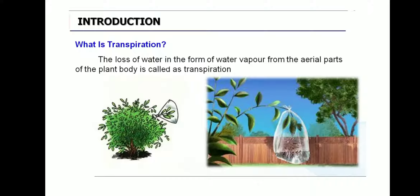When you pour water, it is sucked by the root, and the tissue called xylem is very much involved in the transportation of water to all parts of the plant. The absorbed water is supplied to all parts of the plant. This water is used for the process of photosynthesis, and the excess water is released out from the plant — this is what we call transpiration. The loss of water in the form of water vapor from the aerial parts of the plant body is called transpiration.